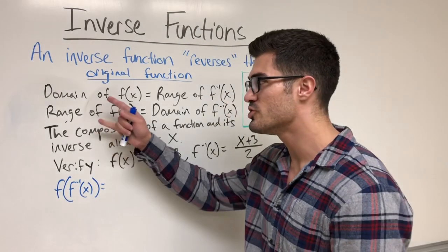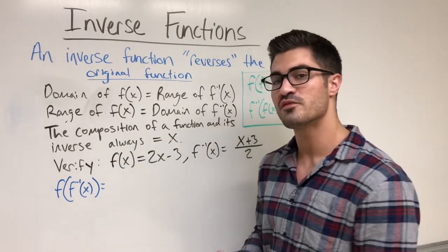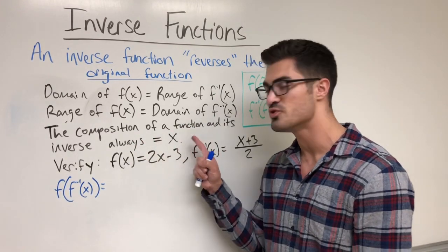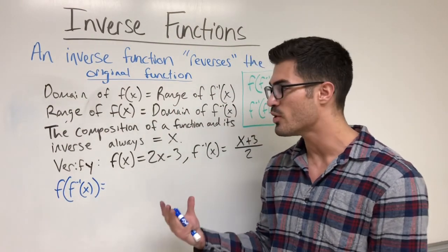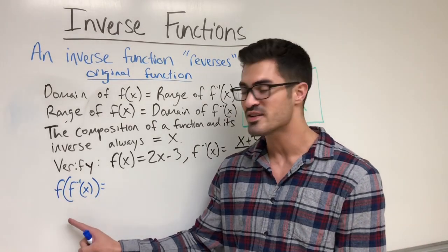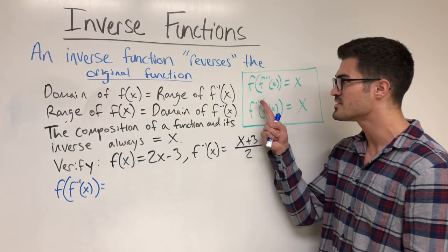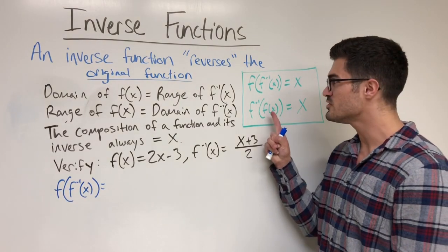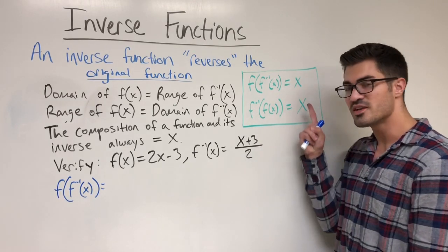There's one more important property of inverse functions: the composition of a function and its inverse is always equal to x. Think of the inverse reversing the original — when you compose a function and its inverse, everything done to x gets undone and you're left with just x. This works both ways, whether the inner function is the inverse or the original.